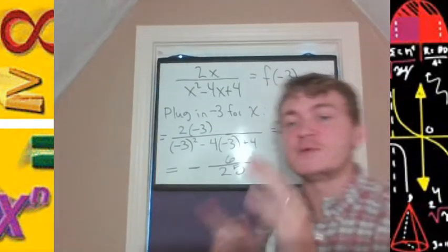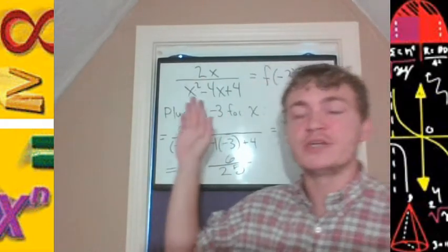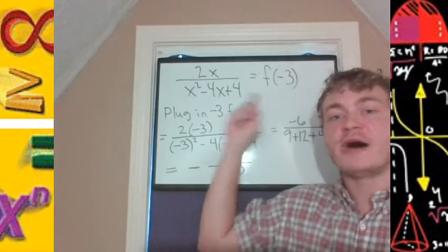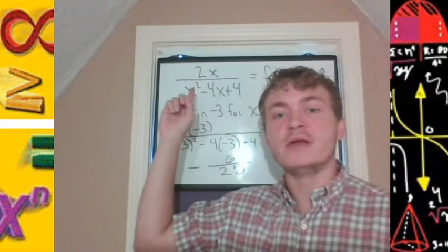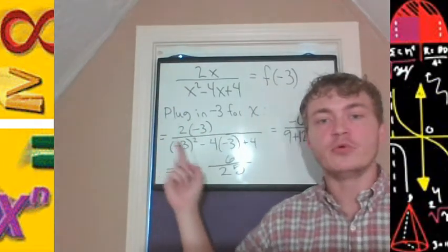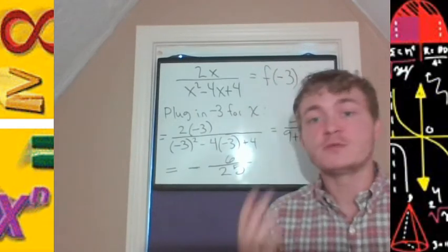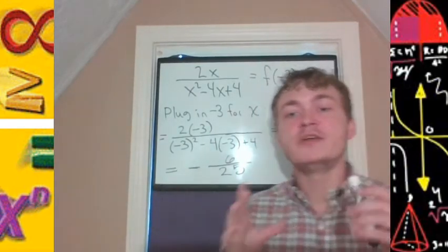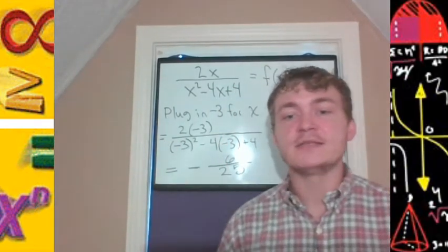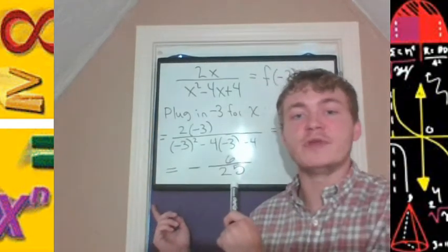This shows why we learn about simplifying fractions when discussing rational expressions: when we evaluate a rational expression by plugging in a value for x, there's no longer a variable — it becomes arithmetic and order of operations. By plugging in negative 3 using substitution, the function when x is negative 3 equals negative 6 twenty-fifths.